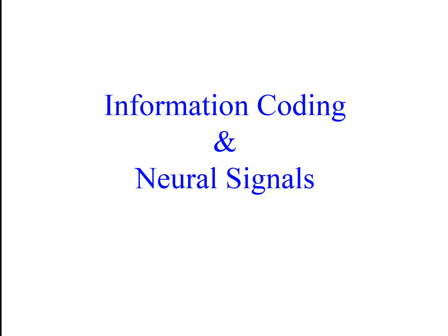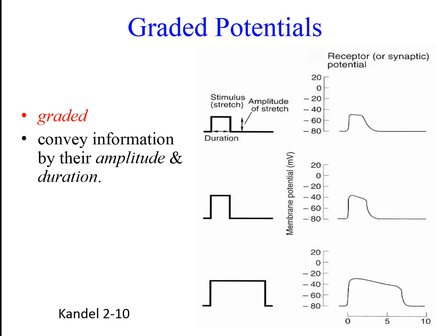Let's review how neurons code information about magnitude and duration and conserve this information as it is transduced. These data show graded potentials recorded in a stretch-sensitive afferent in response to different amplitudes or durations of muscle stretch. Note that as the intensity of the stimulus increases, the amplitude of the graded potential increases. And as the duration of the stimulus increases, the duration of the graded potential increases. Thus, the amount of change in the membrane potential and how long it stays different from baseline tells you about the magnitude of the stretch and how long it lasted.